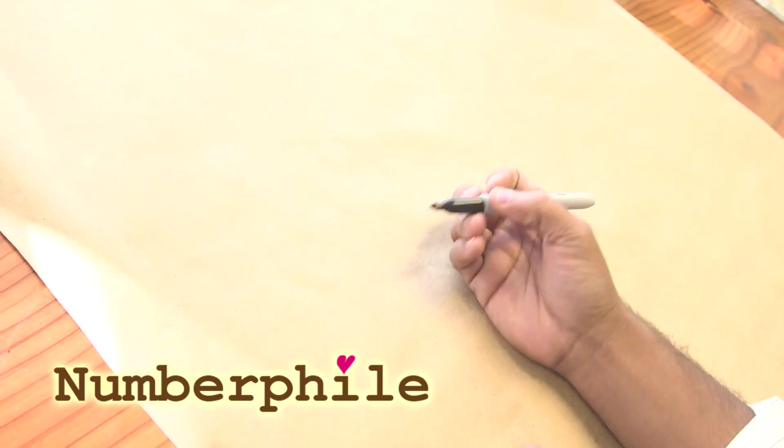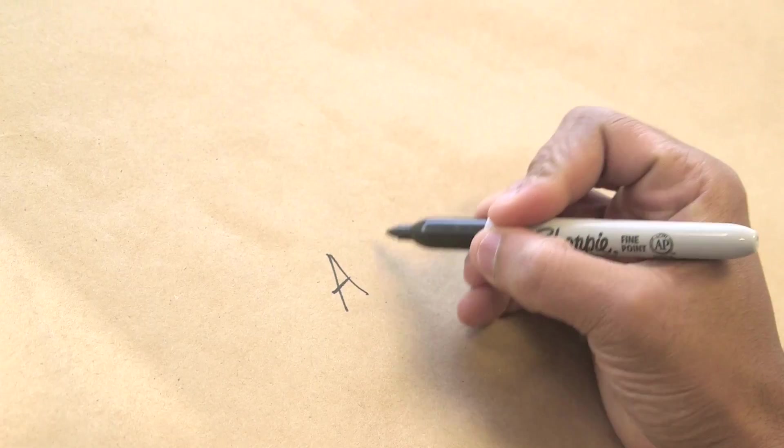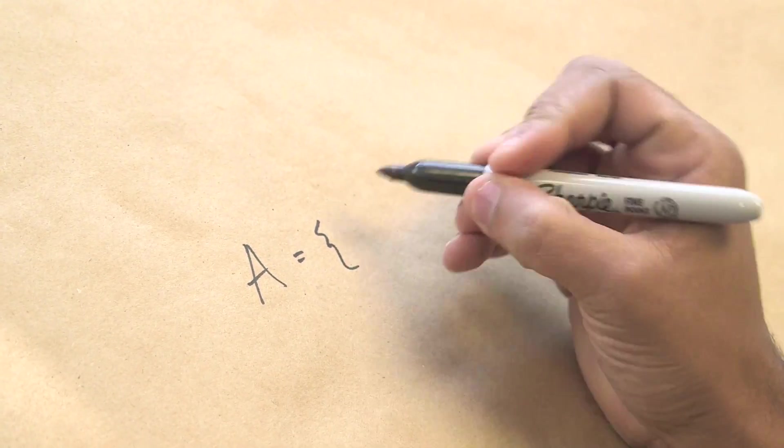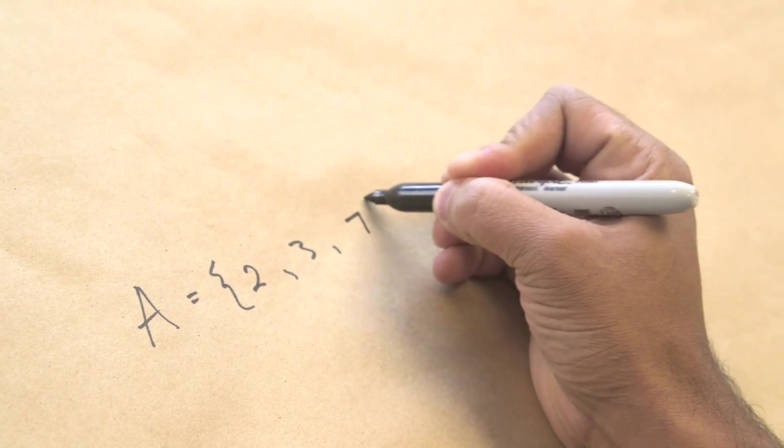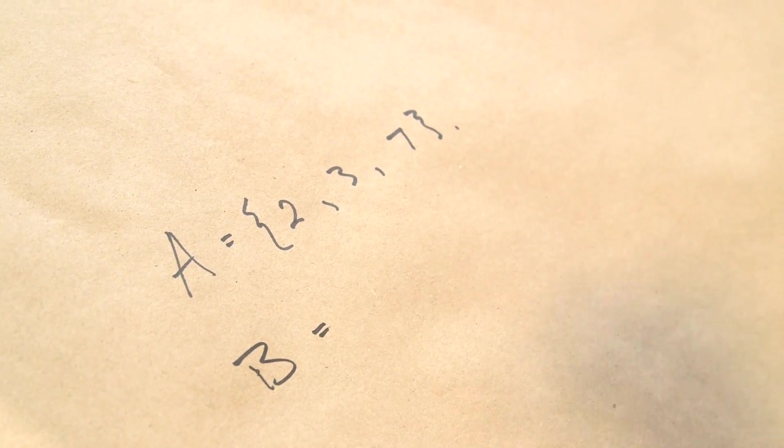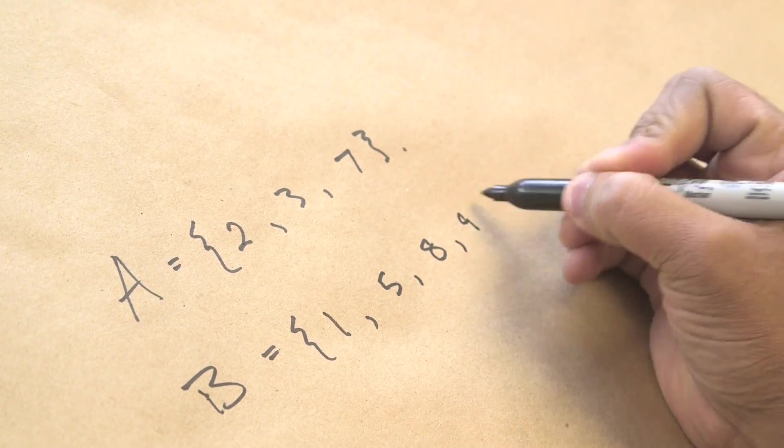And what we're going to do is try to add sets together. So let's say we have a set that's called A, and we'll write the notation and give an example. This set is 2, 3, 7. Let's have another example. We'll call it B and we'll say that B is 1, 5, 8, and 9.